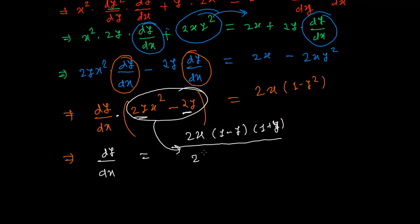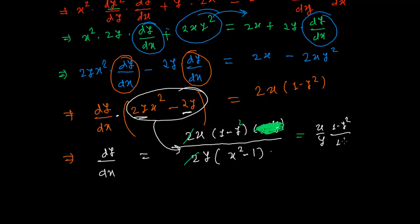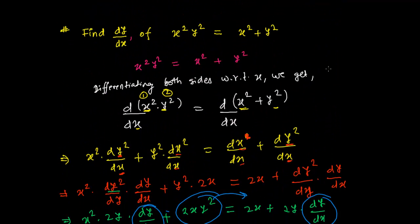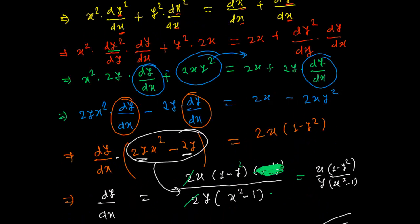Factor out 2y from the left bracket to get 2y(x² − 1). The 2s cancel from both sides, and the final answer is dy/dx = x(1 − y²) / y(x² − 1). There's no need to expand (1 − y²) further. So dy/dx equals x over y times (1 − y²)/(x² − 1).